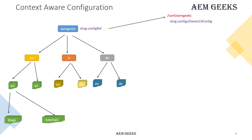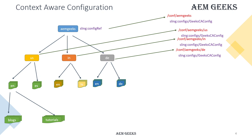Now, if I need different configuration for US, India, and Germany, I create a configuration specific to each country. I create a folder inside my amgeeks folder — a sling folder called US (name can be anything, since you refer to it via the sling:configRef property). I add the same configuration under this folder with different values. The same way, I create configurations for other countries. Remember, you refer to these configurations using the sling:configRef property wherever needed.